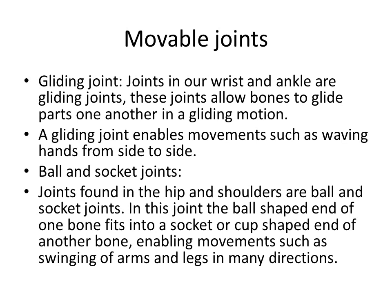The gliding joint is present mainly in the wrist and ankle. If you take your hand, you can see this gliding joint. It allows the bones to glide over one another. The gliding joint enables movement such as waving hands from side to side.